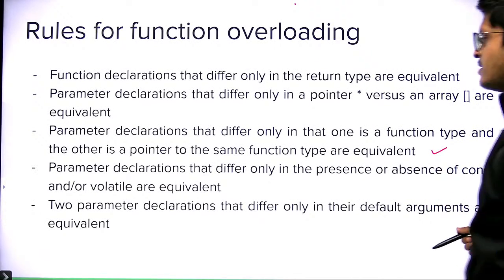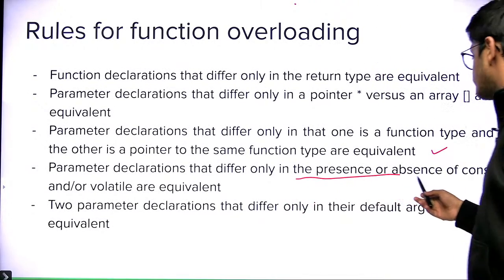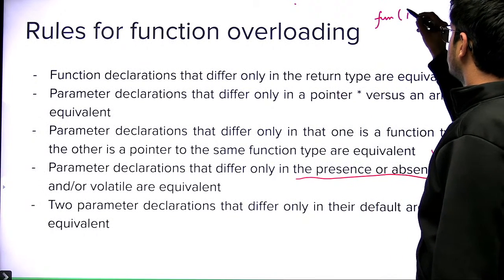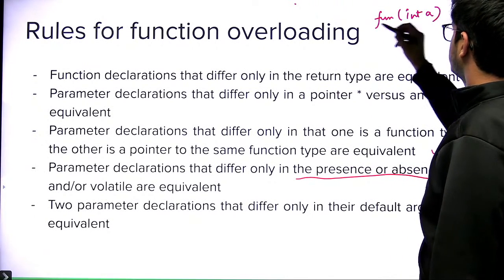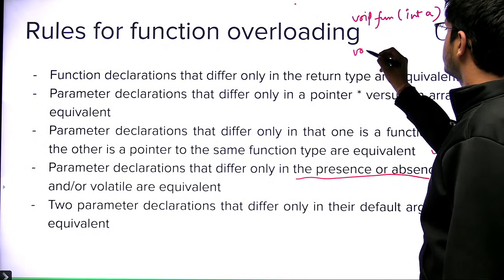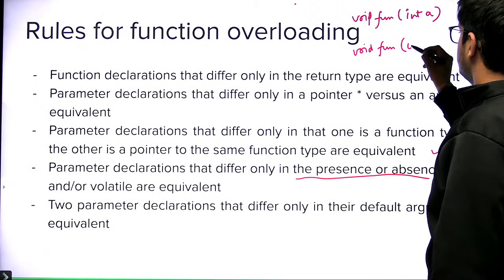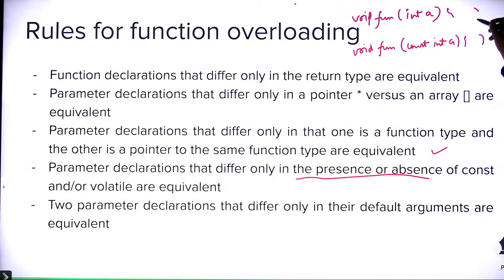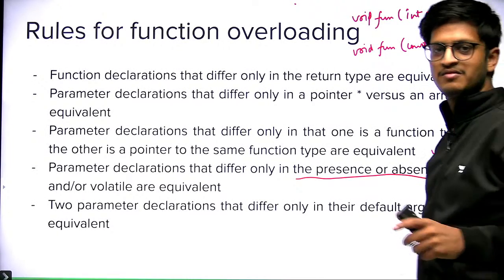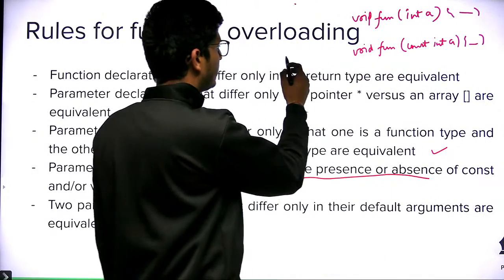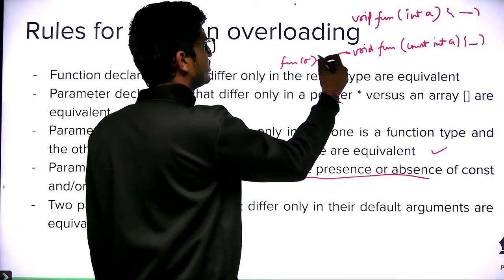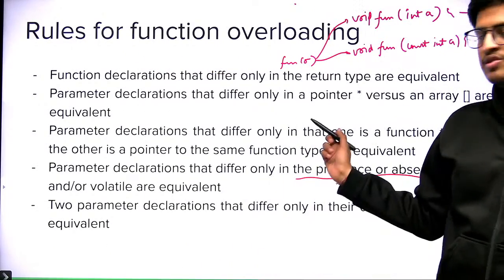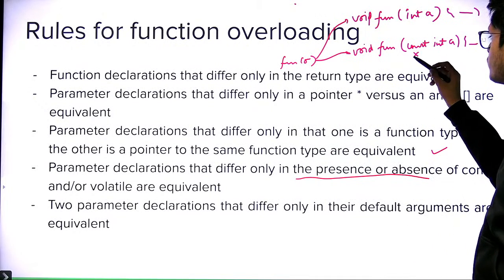The next rule: parameter declarations that differ only in the presence or absence of const or volatile are equivalent. So you cannot overload a function like void fun(int a) with void fun(const int a) — when calling fun(5), the compiler doesn't know which function to call, so this is not allowed.